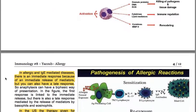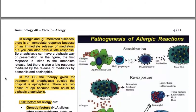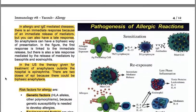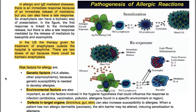In IgE-mediated allergic diseases there is an immediate response because of immediate mediator release, but there can also be a late response — anaphylaxis can have a biphasic presentation. The first response is linked to the immediate release, but there is also a late response mediated by basophils and eosinophils. In the US, the therapy for anaphylaxis outside the hospital is epinephrine, with two doses available because of biphasic anaphylaxis.